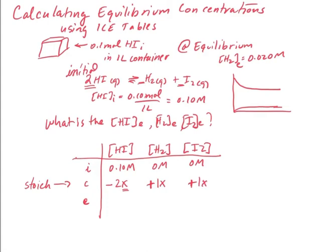When you're doing the change row, you don't even have to think — you just immediately go to the reaction, pull those numbers in, and you'll have the correct change. You just have to make sure you put minuses for reactants and pluses for products. Then in the equilibrium row, we take the initial condition and combine it with the change: 0.10 molar minus 2x for HI, and 0 molar plus x is just x, and 0 molar plus x is just x for H2 and I2.